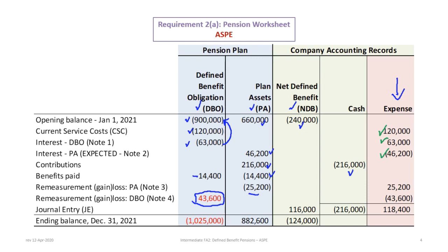However, what's different is — if you recall in tutorial 10a — these were included in OCI, but now they're not. Now they're included in the pension expense. The pension expense is basically the sum of the three items we had before, plus the remeasurement gain or loss — in this case a remeasurement loss on the plan assets and the remeasurement gain on the DBO. Our pension expense is $118,400.